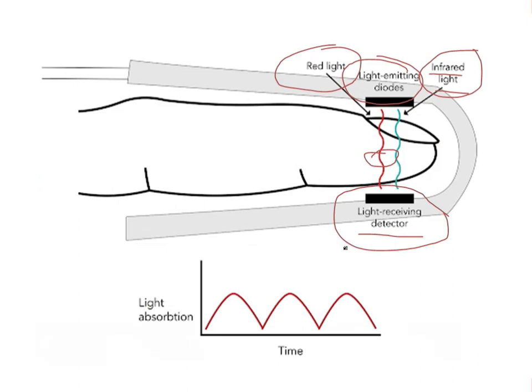We will take the ratio between the deoxygenated hemoglobin and the oxygenated hemoglobin, and we will use the microprocessor in the machine. This ratio will be correlated with an algorithm already saved in the microprocessor. Experiments done on volunteers correlate the ratio and the oxygen saturation.